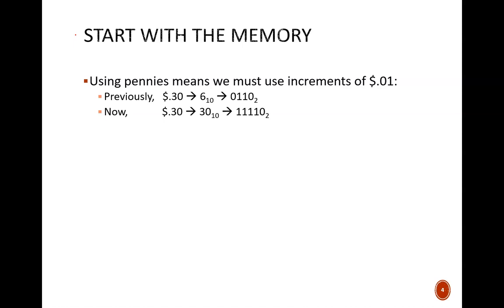Previously, with the smallest coin being a nickel, we could use state memory to represent increments of 5 cents. For example, 30 cents was encoded as 0110. That won't work with pennies.